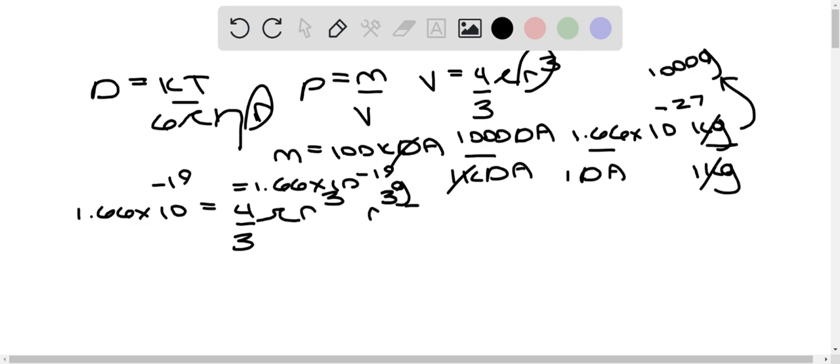And then r cubed is equal to 2.94 times 10 to negative 20. So cubing those sides, we have that the cubed root of this number equals 3.1 times 10 to the negative 7.